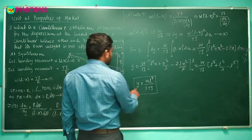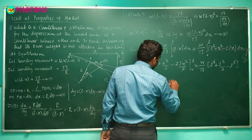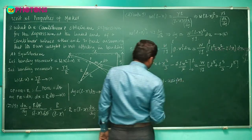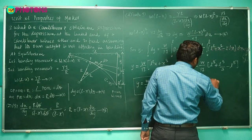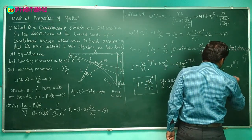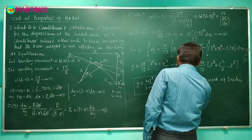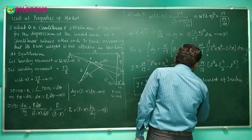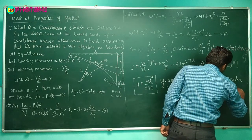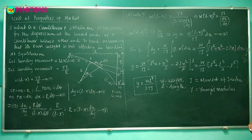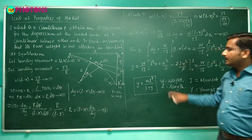In the expression y = WL³ / 3YI: W is the weight applied at the free end, L is the length of the cantilever, Y is the Young's modulus of the material, and I is the moment of inertia of the cross-section. So the vertical depression of the cantilever is y = WL³ / 3YI.